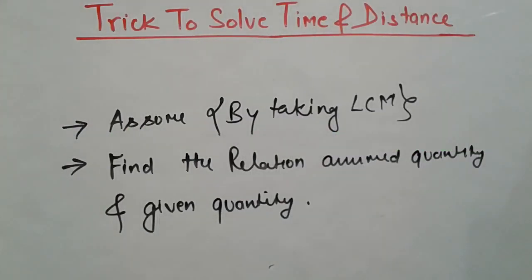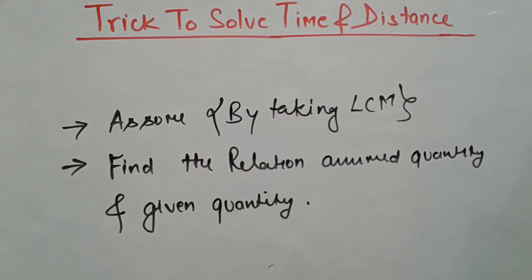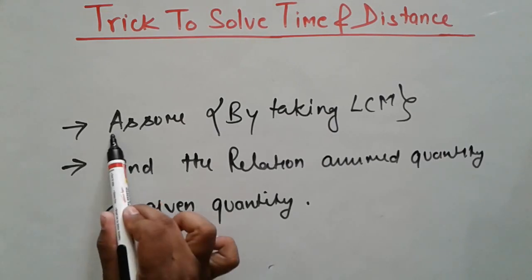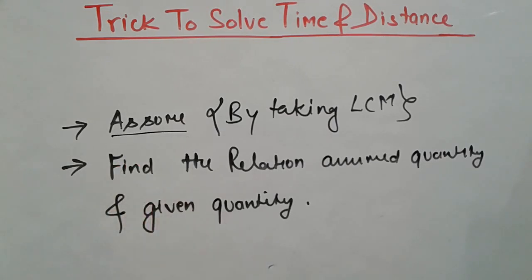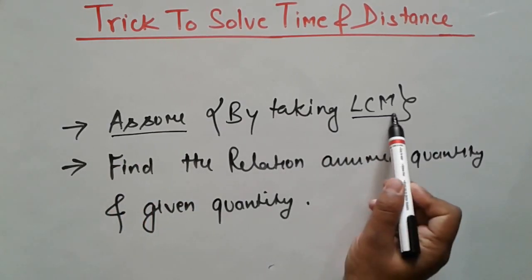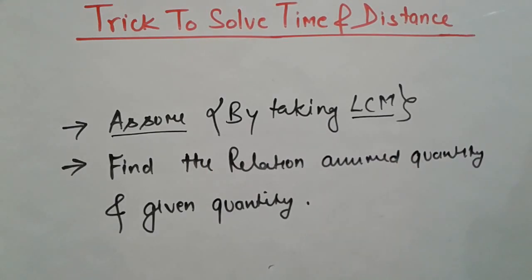Hello friends. In this video, I am going to share a trick to solve time and distance problems. The trick is very easy — we have to just assume the quantity that is not given, and we assume this quantity by taking the LCM. Sometimes we call it the LCM method.